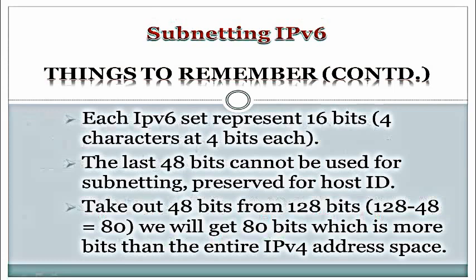Each IPv6 set represents 16 bits — 4 characters at 4 bits each. The last 48 bits cannot be used for subnetting because they are reserved for the host ID. Taking out 48 bits from the 128 bits means we have 80 bits available, which is more bits than the entire IPv4 address space.